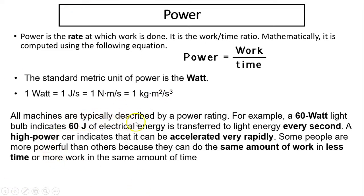So all machines are typically described by a power rating. For example, a 60-watt light bulb indicates 60 joules of electrical energy is transferred to light energy every second. A high-power car indicates that it can be accelerated very rapidly. Some people are more powerful than others because they can do the same amount of work in less time or more work in the same amount of time.